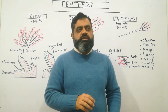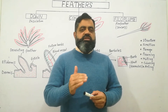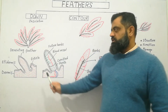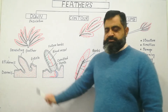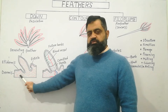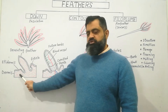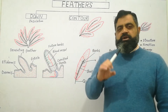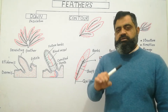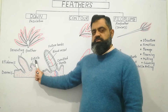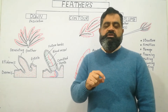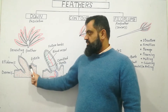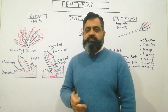To understand the structure of a feather, let's start with the beginning or production of a feather inside the skin of birds. I have taken a cross section of a bird's skin. The lower portion of the skin is known as the dermis, and the dermis has an upper layer known as the epidermis. In the dermis, there is a depression known as a follicle — the place where a new feather will germinate or be produced. This is a developing feather that is going to become a new feather.